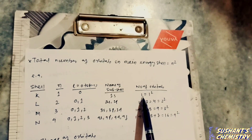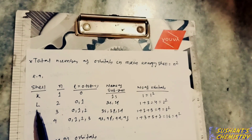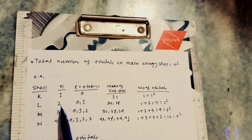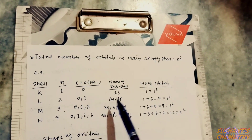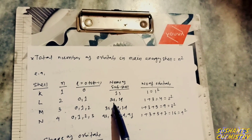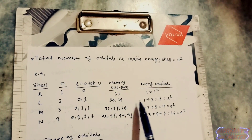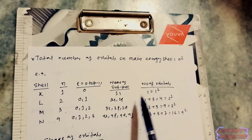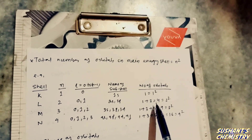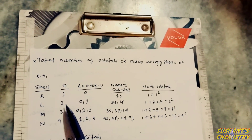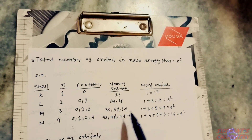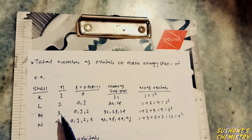For the L shell, n equals two. Putting n equals two gives l values of zero and one. The subshells in the L shell are 2s and 2p. The 2s subshell has one orbital; the 2p subshell has three orbitals — 2px, 2py, 2pz — giving a total of four orbitals, that is, two squared.